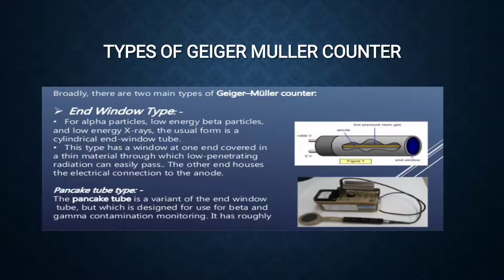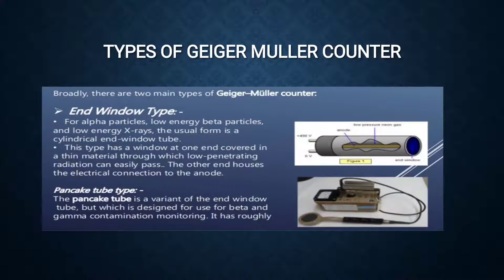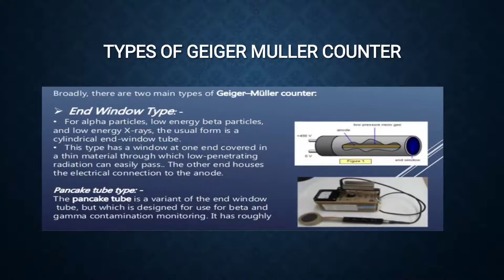There are two types of Geiger-Müller counters: the end window type and the pancake tube type. The end window type is usually used for alpha particles, low energy beta particles, and low energy x-rays. It has a cylindrical form with a window at one end covered by a thin material through which low penetrating radiation can easily pass, and the other end houses the electrical connection to the anode. The pancake tube type is a variant designed mostly for beta and gamma radiations.